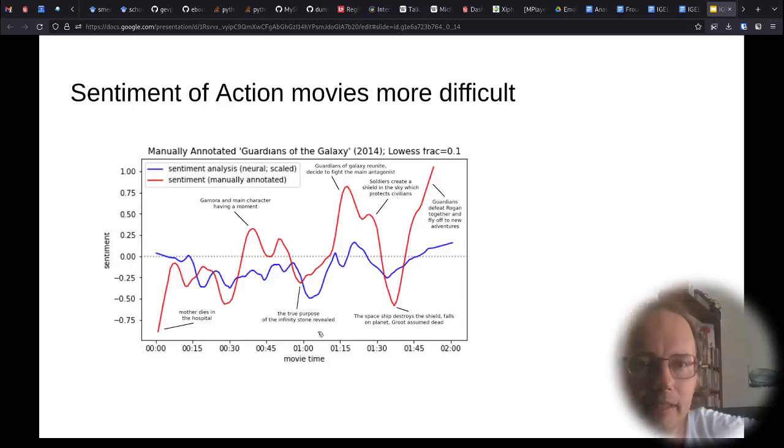So for example, if we take an action movie, here, the Guardians of the Galaxy, we see that there are very high peaks, which are almost not detected by the sentiment analysis. And this can be explained by the fact that if there are, for example, battle scenes, there might not be as much dialogue, and the input for the sentiment analysis doesn't provide enough information. So this is clearly a limitation of the method.